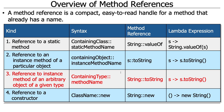You can also have a reference to an instance method of an arbitrary object of a given type, as opposed to a specific object of a particular type. In that case, it's the class name, colon colon, method name — for example, String::toString. Note that toString is not a static method, but there would be some arbitrary object that could be used for that.